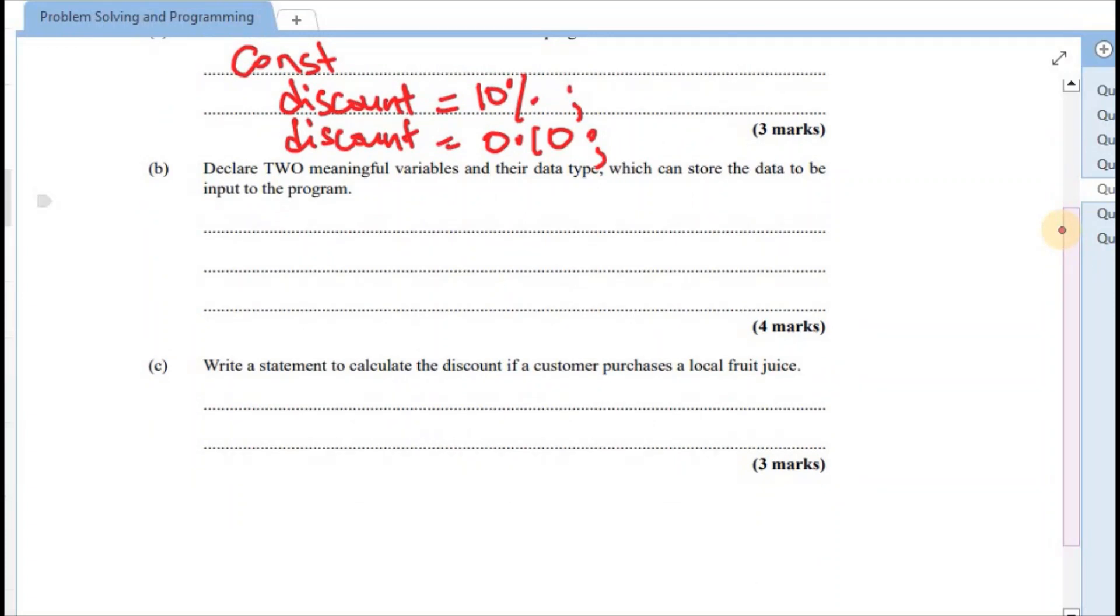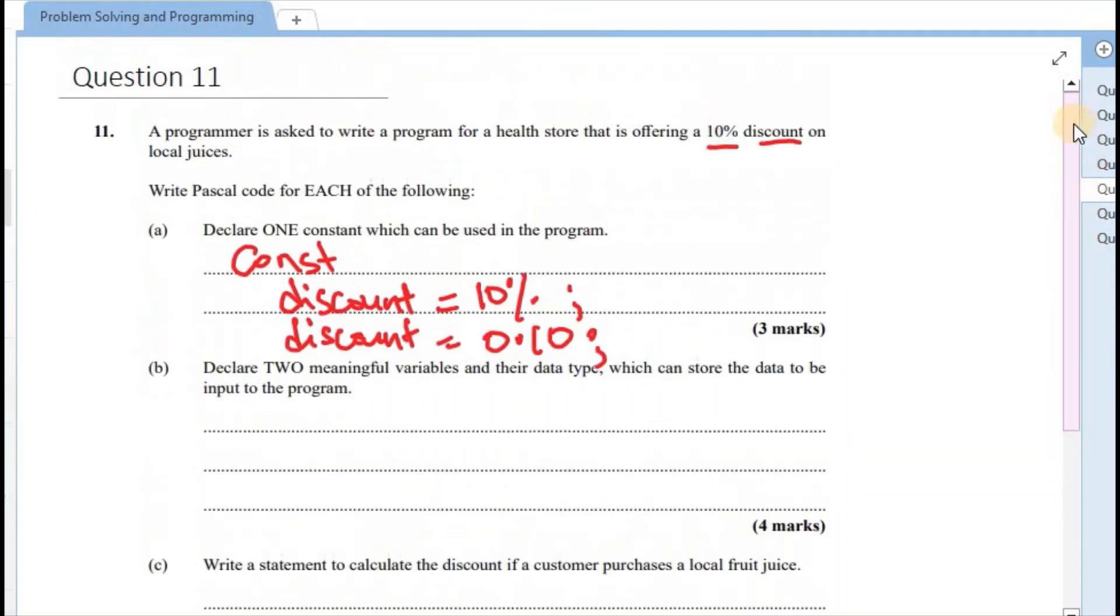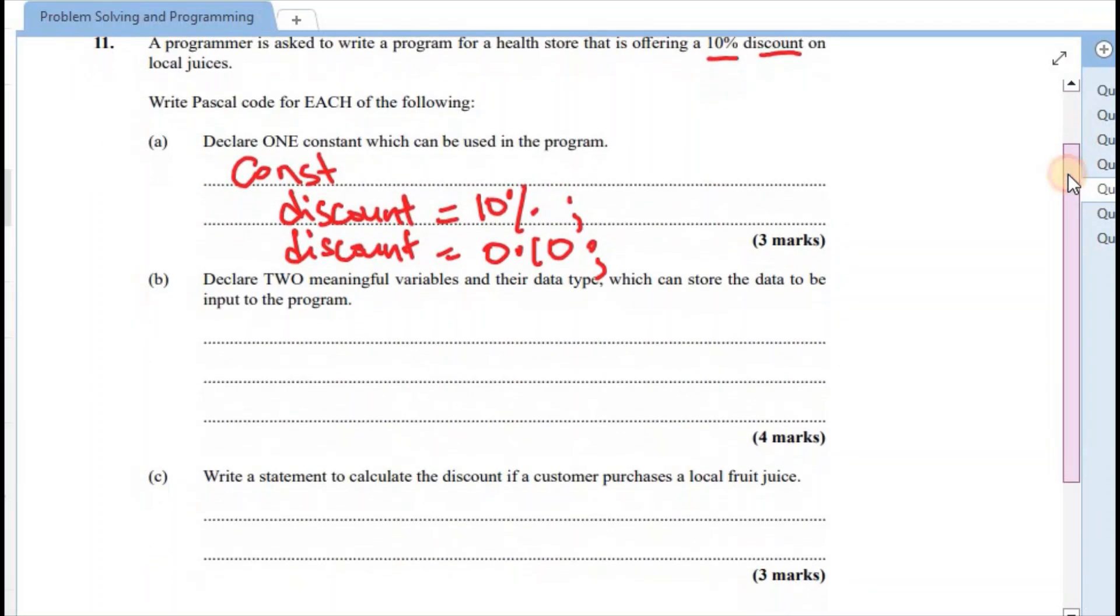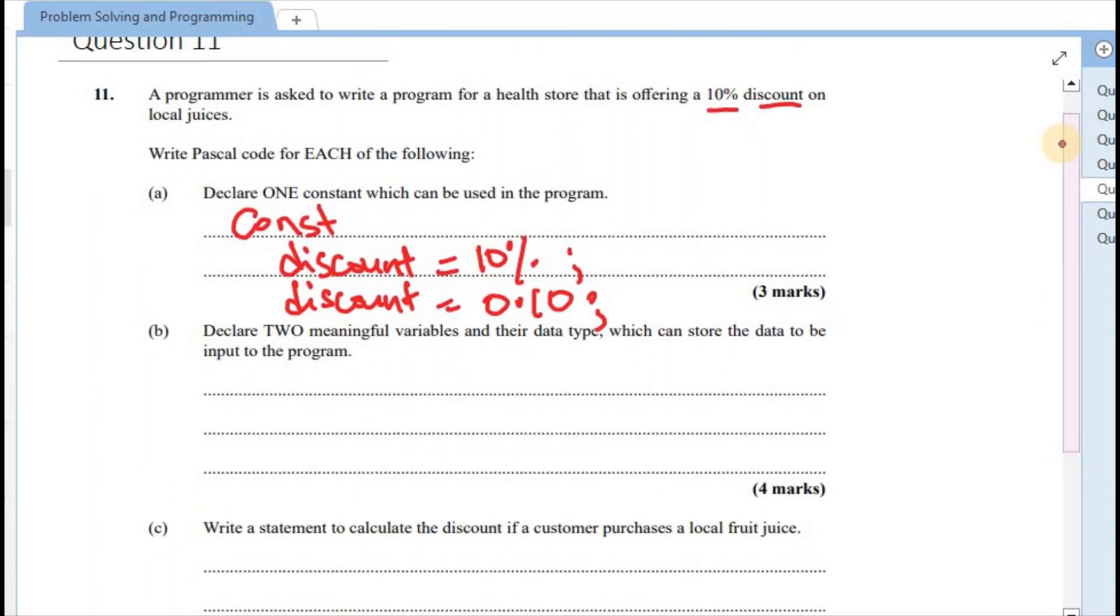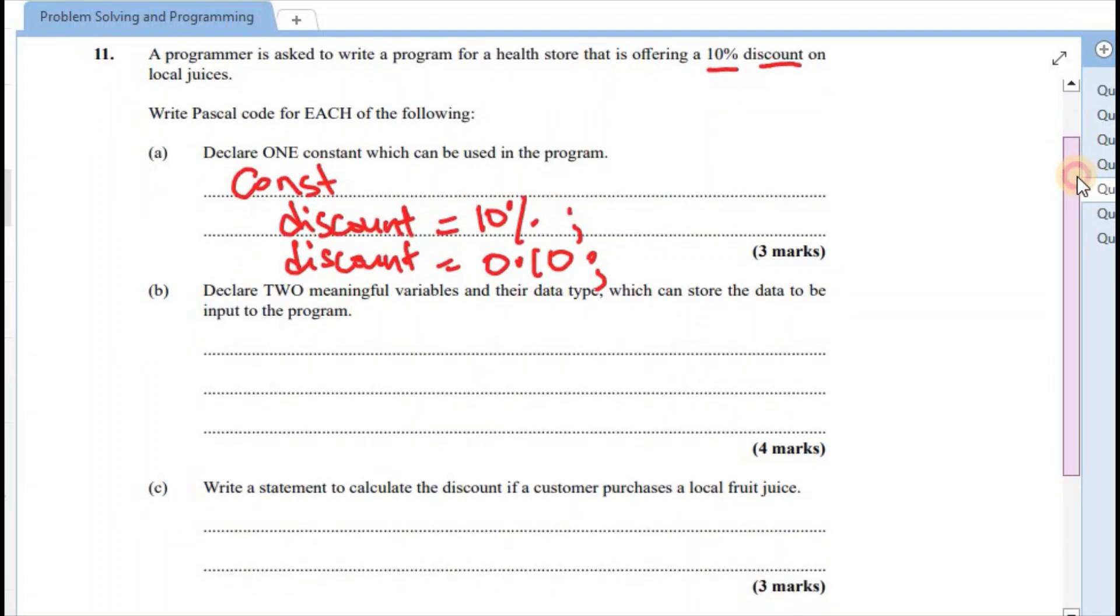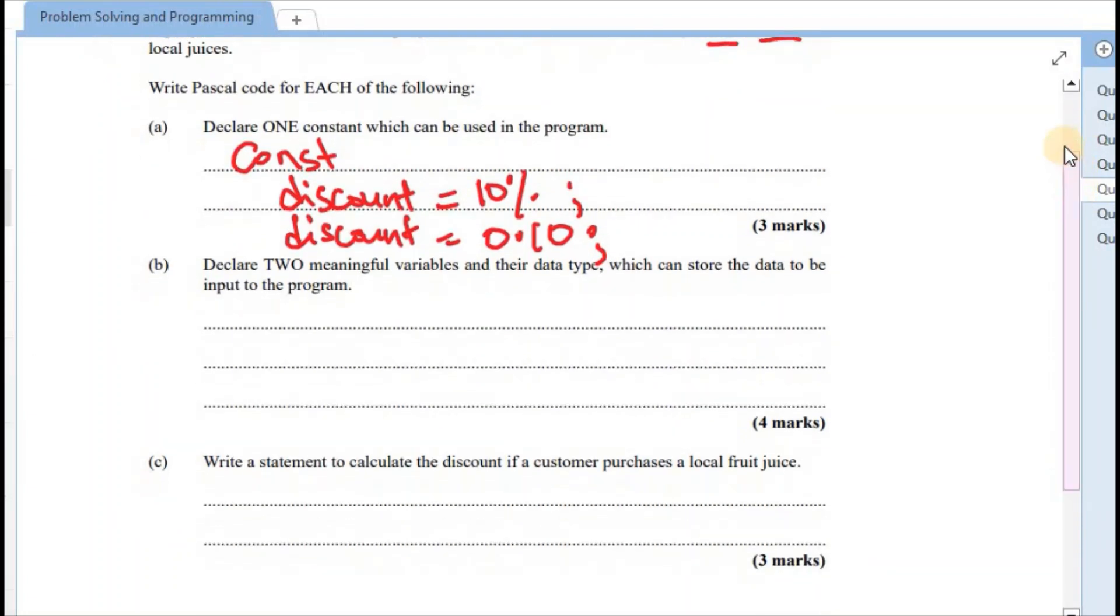All right. Next one. Declare two meaningful variables and their data type, which can store the data to be input to the program. All right. So two variables - maybe one, we could ask the person for their name. Another could be asking for the price of the juice that they wish to purchase. All right. So again, similar to const, we have our var, short for variable. What are the variables that we want to declare and assign their data type?